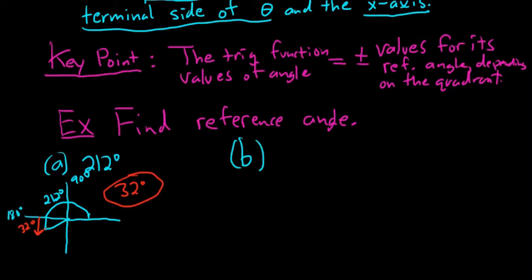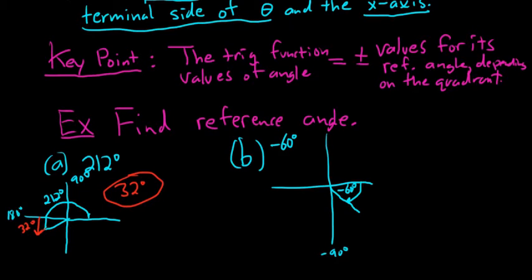Let's do another one: negative 60 degrees. Drawing the picture — negative 60 is a negative angle, so starting from the positive x-axis we go clockwise; negative 60 lands here, above negative 90. The reference angle is the positive acute angle made with the terminal side and the x-axis, so we go counterclockwise from the terminal side to the x-axis. That angle measures 60 degrees, so our reference angle is 60 degrees.